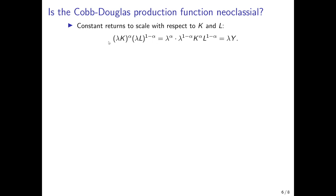We take the Cobb-Douglas production function, multiply capital by a certain amount lambda, multiply labor by the same lambda, and reshuffle terms. We can pull out lambda to the power of alpha from the capital term and lambda to the power of one minus alpha from the labor term. The exponents add to give lambda times K to the power of alpha times L to the power of one minus alpha — which is lambda times output. So if we multiply both production factors by lambda, output is also multiplied by lambda: constant returns to scale.